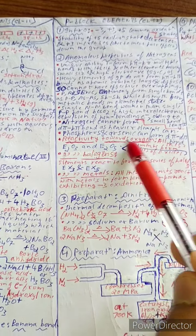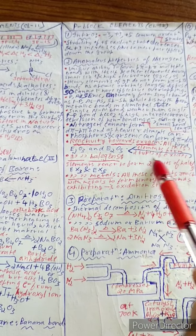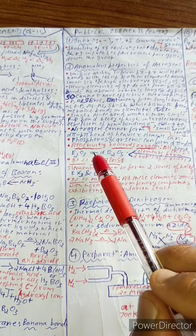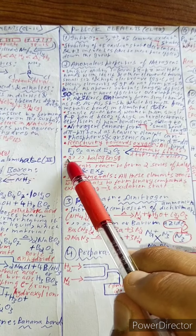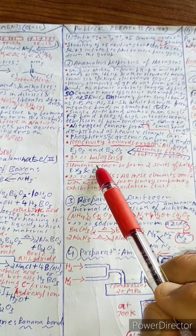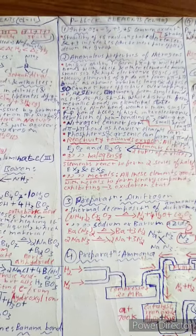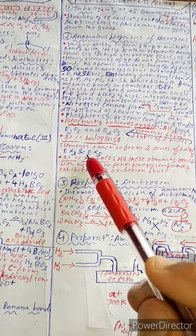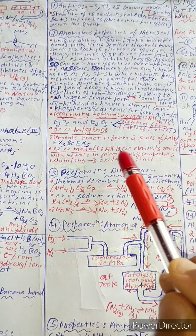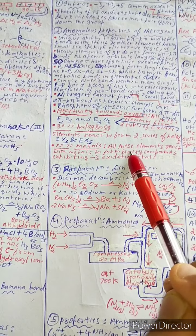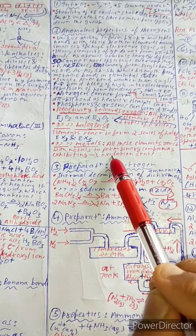Reactivity towards oxygen: all these elements form two types of oxides — E₂O₃ and E₂O₅. Reactivity towards halogens: elements react to form two series of halides — EX₃ and EX₅. Reactivity with metals: all these elements react with metals to form binary compounds exhibiting the −3 oxidation state.